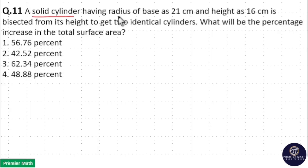A solid cylinder having radius of base as 21 cm and height as 16 cm is bisected from its height to get two identical cylinders. What will be the percentage increase in the total surface area?